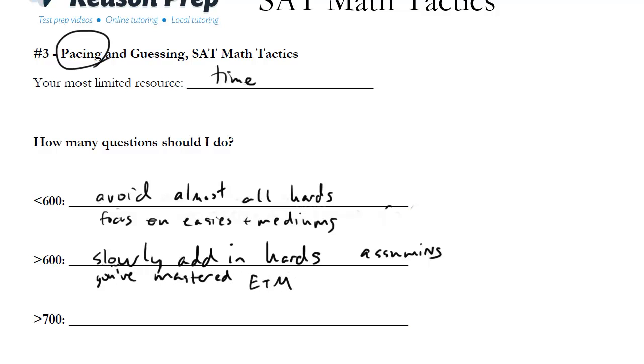So if you're still having issues with eases and mediums, you want to make sure you get those down first because those points are worth equally as many points as the hard questions. So make sure you've mastered those first. And then slowly add in hards or hard questions that you know shortcuts for, hard questions that actually turn out to be easy if you know the right strategy, and hard questions that maybe you like geometry.